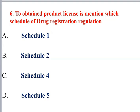Schedule 2 includes forms related to product license and manufacturer. Schedule 3 includes certificate forms and recommendation sources. A clinical trial license can also be obtained, covered under Schedule 12 with the relevant certificate forms.